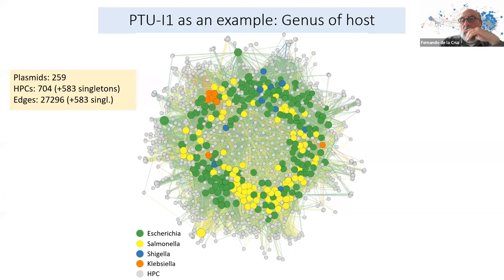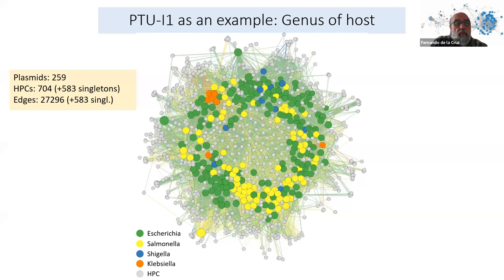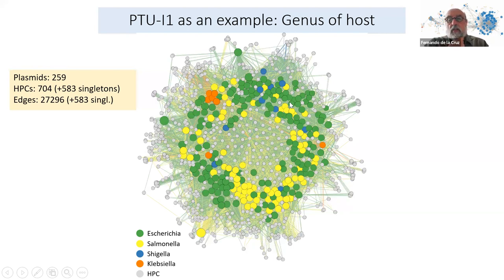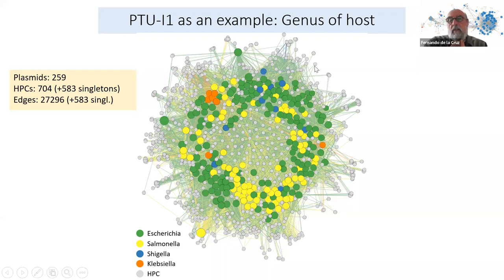As an example, this is PTU I1. The PTU contains 259 members. This is an ACLNET network — a network constructed by the relationship of plasmids with different protein families. Each gray node is a protein family and each colored node is a plasmid. All plasmids within PTU I1 share a number of plasmid protein families, which form the core of this PTU, and there are many other protein families present in some but not all plasmids.